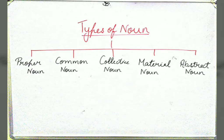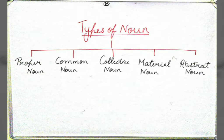There are five types of noun: proper noun, common noun, collective noun, material noun, and abstract noun. Proper noun is a specific name of a person or place. Common noun is the usual general name, like pen, pencil, book. Collective noun is the name of a group. Material noun is the name of a substance or matter. Abstract noun is the name of a feeling or action.